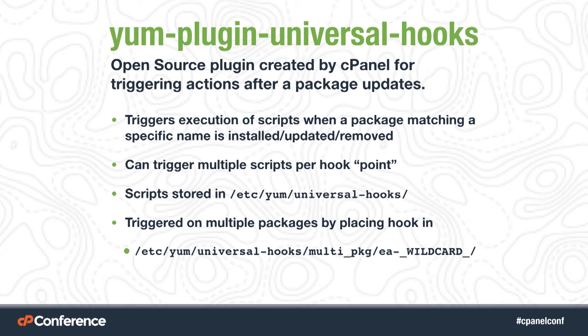The way this works is that we have a directory, /etc/yum/universal-hooks. It's not designed to work only with cPanel — if you have a regular CentOS system, you can use it with that as well. Inside that directory, you have the ability to use EA-Wildcard, so anytime a package with EA- at the front of it is updated, you can have a directory of scripts that you put in place. This allows you to trigger custom actions at any point in the provisioning process — for example, notifying a central monitoring system that an update ran.